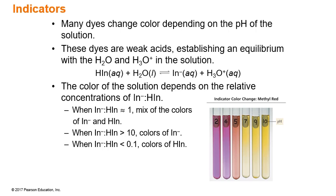Just like with our buffer solutions, indicators tend to work in a range of 0.1 to 10 of the basic form to the acidic form. When we get in the middle, that's when we get a mixture of colors. These tend to change at plus or minus 1 pH unit from their pKa.